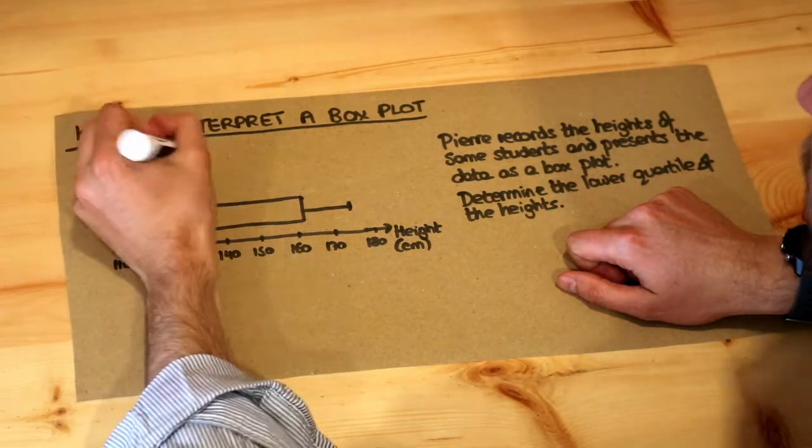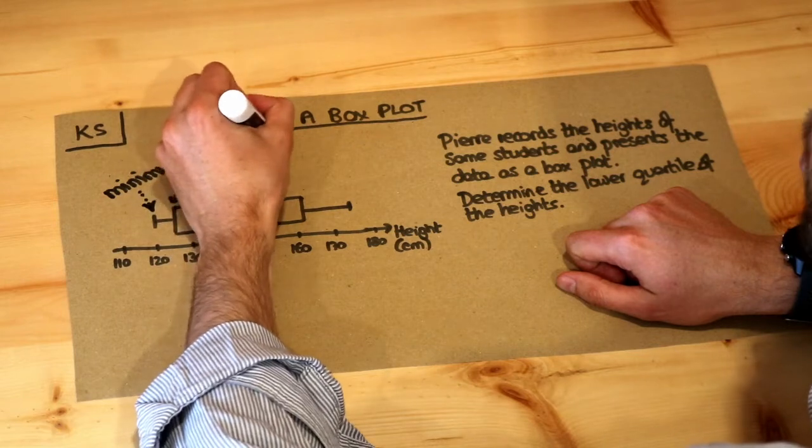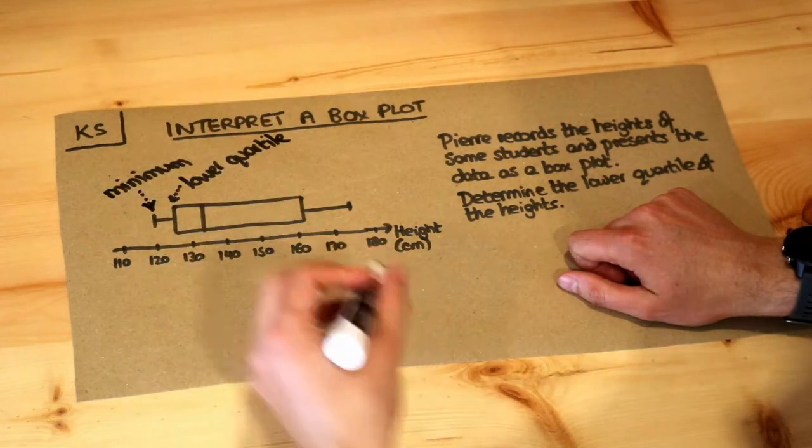The left of the box is the lower quartile. Now remember what lower quartile means. It's the value that's 25%, a quarter of the way along your data.